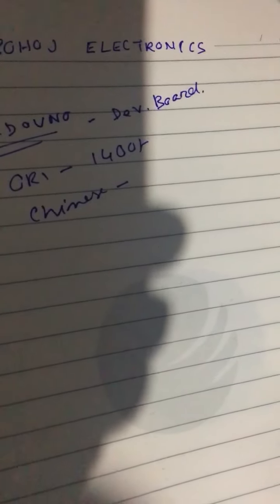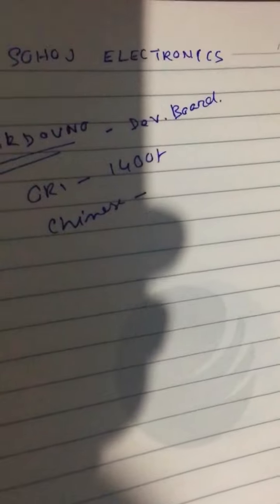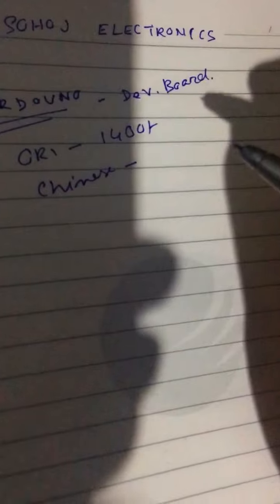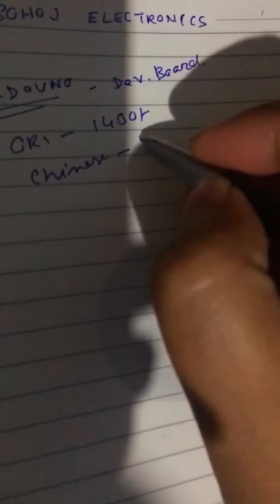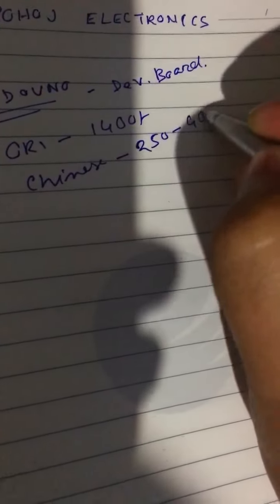It comes in a variety of originals. This is the Chinese version. The Chinese board is not very different, but every electronic component is available in China. The Chinese board is a clone board — it is 100% the same as the original. This Chinese clone board is available for 250.